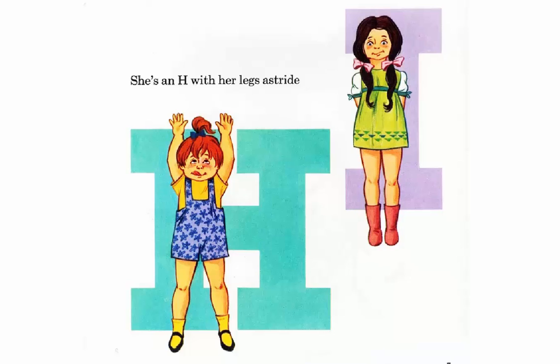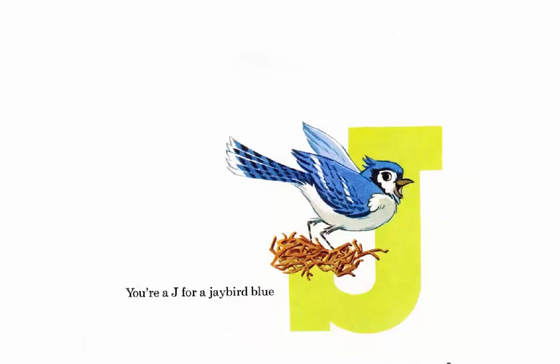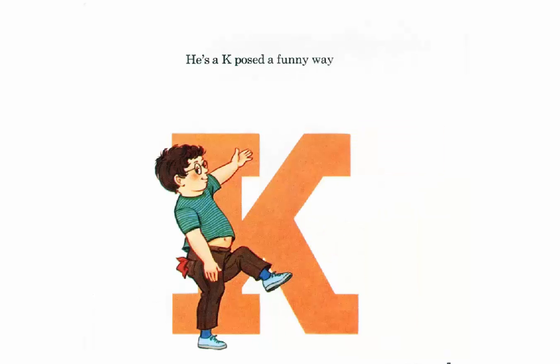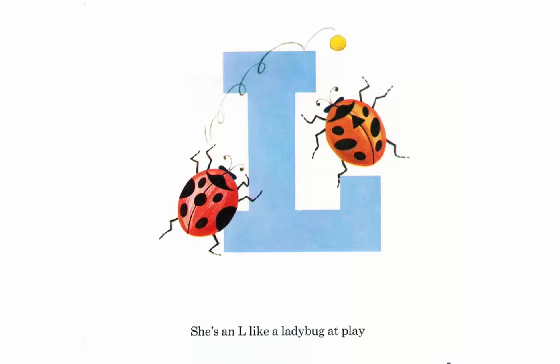She's an H with her legs astride. I'm an I standing straight and true. You're a J for a jaybird move. He's a K posed a funny way. She's an L like a ladybug at play.